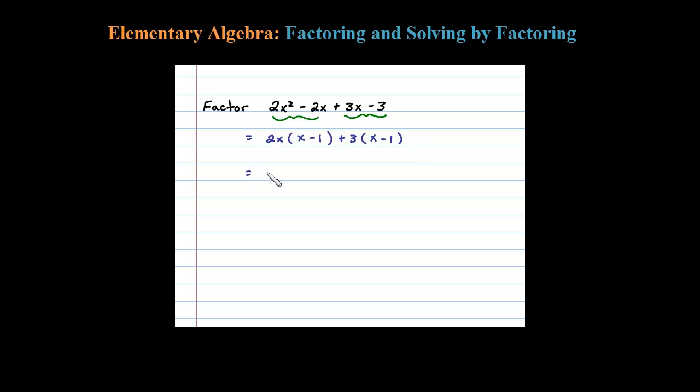Since X minus 1 is common, I'm going to factor that out. Factoring out the X minus 1, what will be left? Well, 2x plus 3. And that's how you factor by grouping.